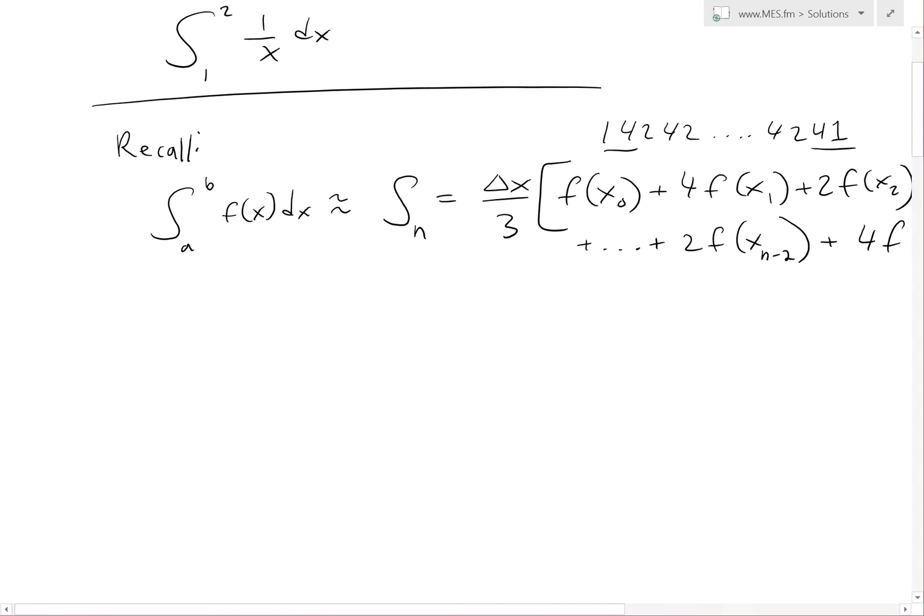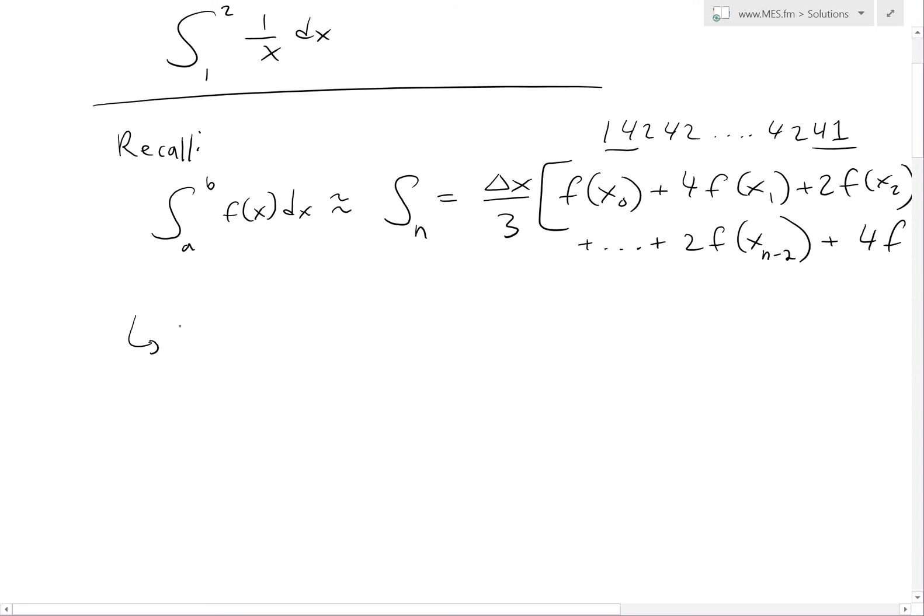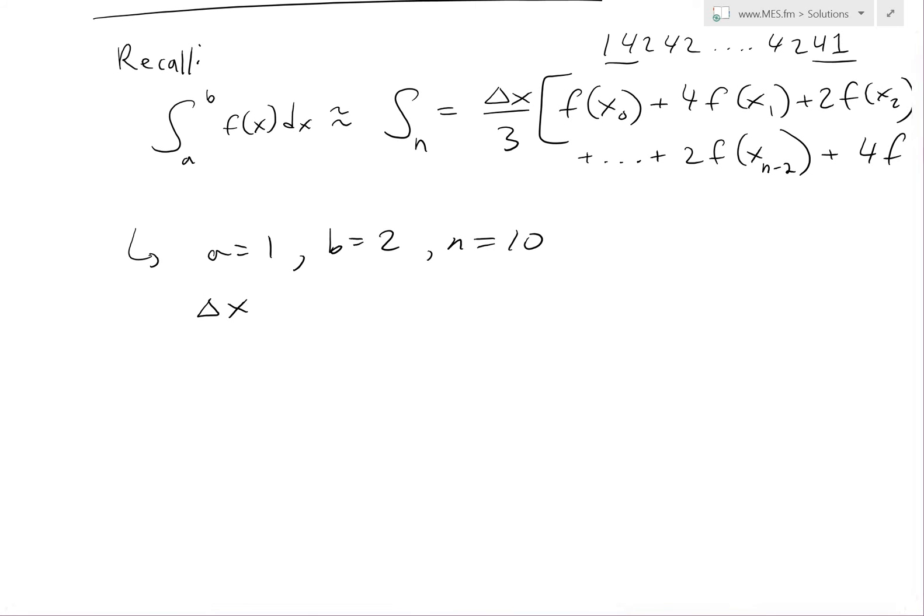In our case, we have a equals 1, b equals 2, n equals 10, and delta x, the width of each subinterval, equals b minus a over n, which equals 2 minus 1 over 10, equals 0.1.